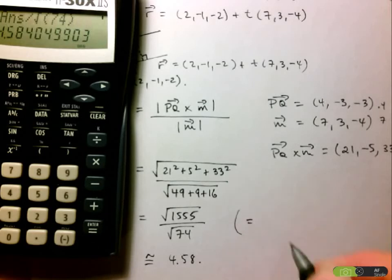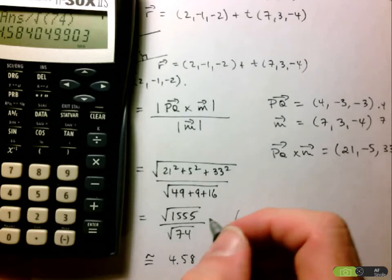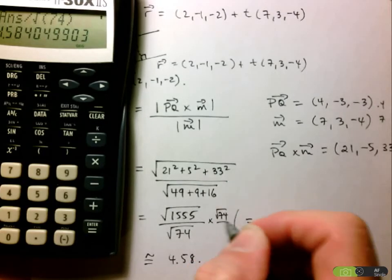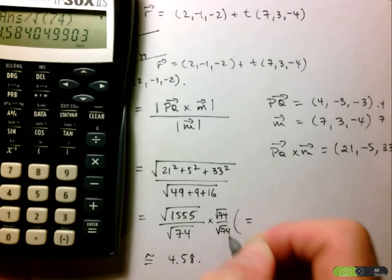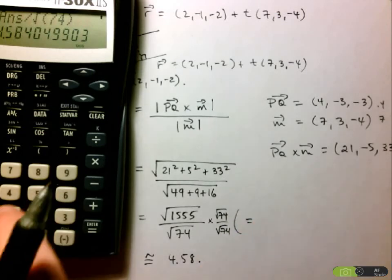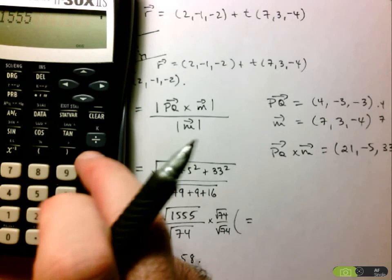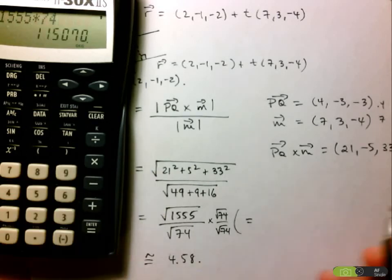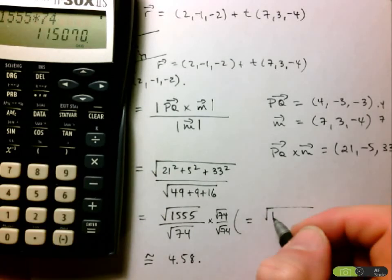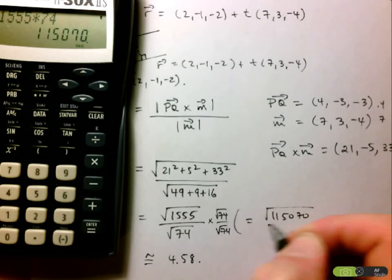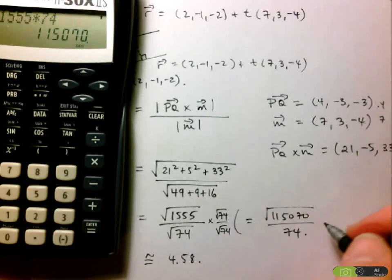Now if we did want to simplify that, we'd just multiply top and bottom by root 74. And so we'd end up with 1555 times 74. So here we'd have the square root of 115,070 over 74. And I think I'm just going to leave it at that.